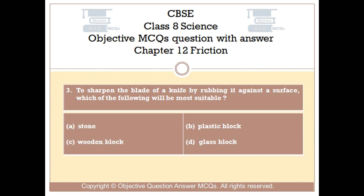Question number 3. To sharpen the blade of a knife by rubbing it against a surface, which of the following will be most suitable? Option A: Stone. Option B: Plastic block. Option C: Wooden block. Option D: Glass block.